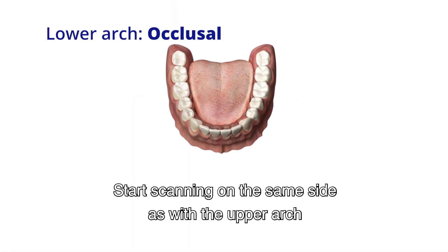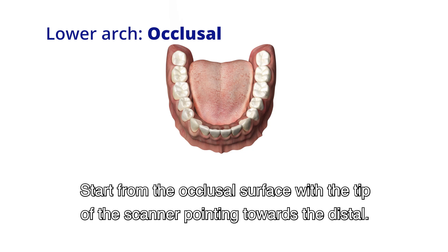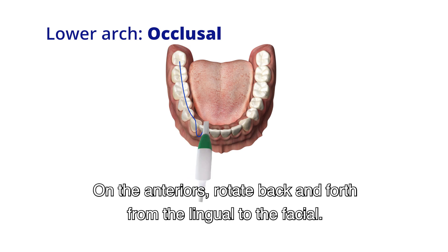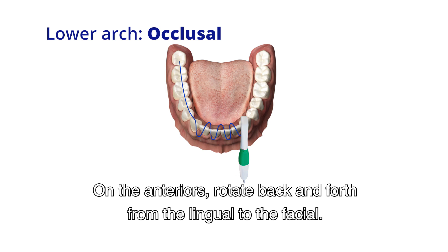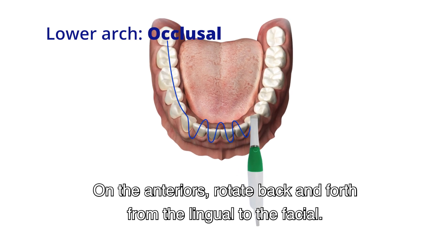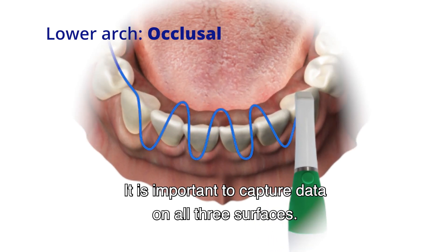Start scanning on the same side as with the upper arch. Start from the occlusal surface with the tip of the scanner pointing towards the distal. On the anteriors, rotate back and forth from the lingual to the facial. It is important to capture data on all three surfaces.